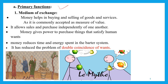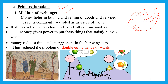Let us discuss primary functions in detail. The first one is medium of exchange. Money acts as a medium of exchange because it comes in between two commodities. Under the barter system we exchanged commodity with commodity, but now money comes in between — the commodity is exchanged for money, and with that money you buy whatever you want. Money helps in the buying and selling of goods and services.